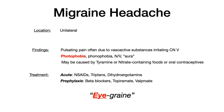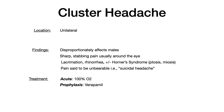Now let's differentiate migraine from cluster headache, the other unilateral headache. Interestingly, cluster headaches disproportionately affect males, whereas both tension and migraine affect females more. Cluster headaches are sharp, stabbing, periorbital pain — around the eye. Because it's periorbital, you see associated eye symptoms: lacrimation, rhinorrhea, and in some cases two symptoms of Horner's syndrome — ptosis and miosis. You won't see the anhydrosis, but you'll see ptosis and miosis. If you see any combination of Horner's syndrome symptoms, lacrimation, or rhinorrhea, think cluster headache.